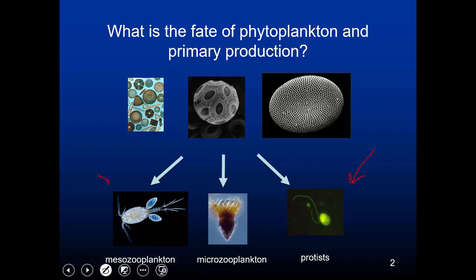Those organisms range from mesozooplankton and even macrozooplankton at the larger end, down to the protists — the single-cell eukaryotes such as flagellates. Today we're going to talk about another fate of primary production: the release of non-living organic material, detritus, and dissolved organic material, DOM. This turns out to be a major fate of primary production via the microbial loop.